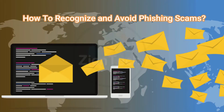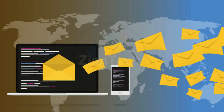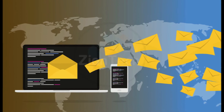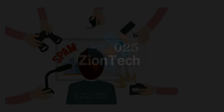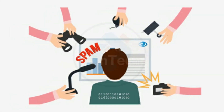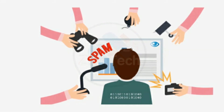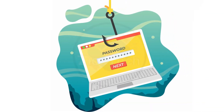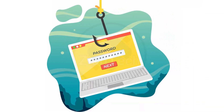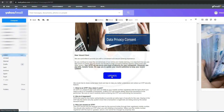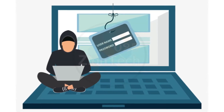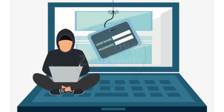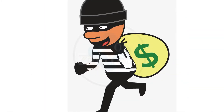How to Recognize and Avoid Phishing Scams. Scammers use email to trick you into giving them your personal information. They may try to steal your passwords and account numbers. If they get that information, they could gain access to your email, bank, or other accounts. Scammers launch thousands of phishing attacks every day and they're often successful.